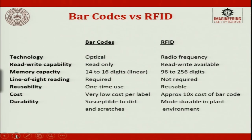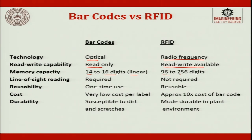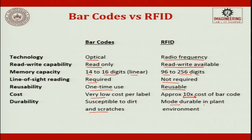Comparing barcode and RFID: barcode technology is optical; RFID uses radio frequency. QR codes are read-only; RFID can read and write. Memory capacity for linear barcodes is 14–16 digits; RFID is 96–56 digits. Line-of-sight reading is required for barcodes but not for RFID. Barcodes are single-use; RFID tags can be reused. Cost per label for barcodes is very low; RFID is approximately 10 times higher. Barcodes are susceptible to dirt and scratches; RFID is more durable in plant environments.